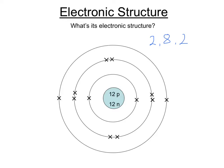The electronic structure tells us a couple of other things. First of all, the final number here will be the same as the group number in the periodic table. And the number of shells tells us what's called the period number.